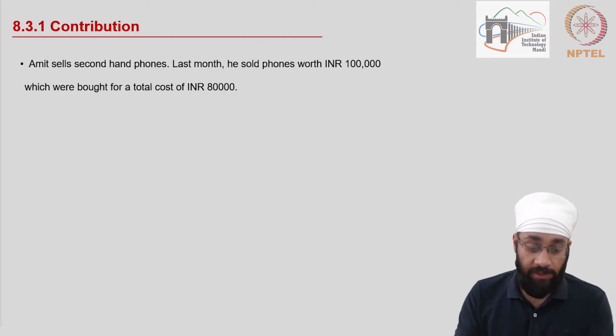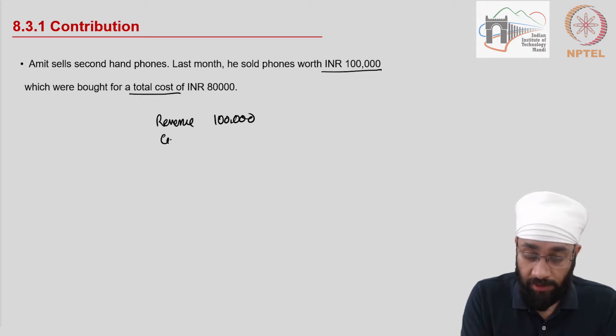Number one, let's look at this one small example. Amit sells secondhand phones. Last month he sold phones worth 100,000, so his revenue is 100,000, and he bought all of these at a total cost of 80,000. Now this is total variable cost, and this is 20,000. This amount is going to be called contribution.